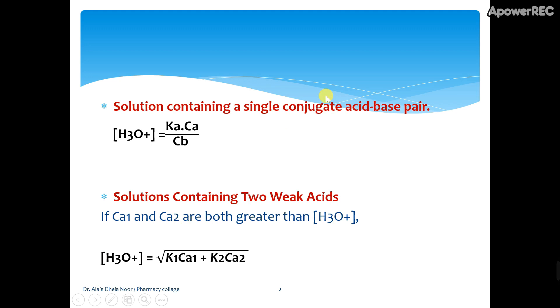If you have this system, the hydrogen ion concentration will be Ka times the concentration of the weak acid divided by the conjugate base.